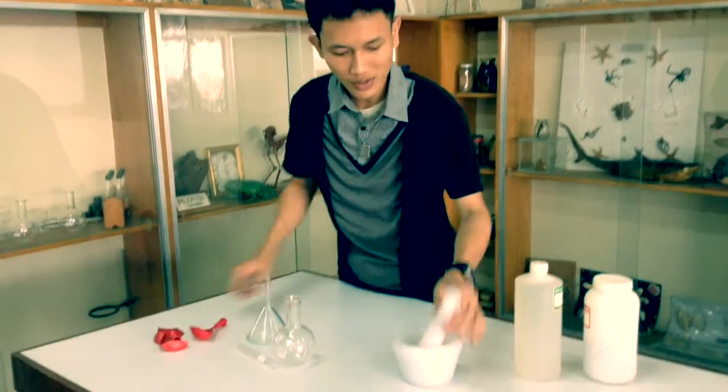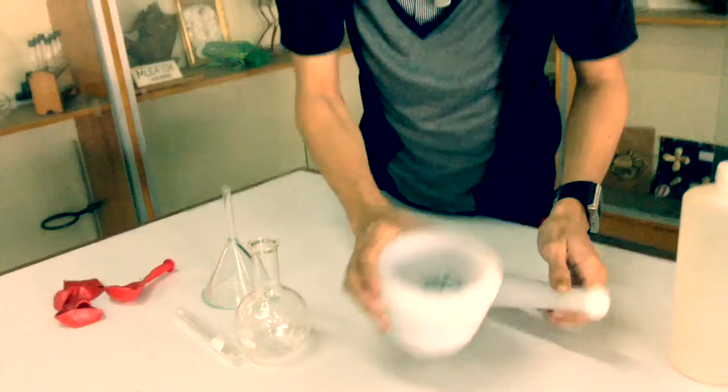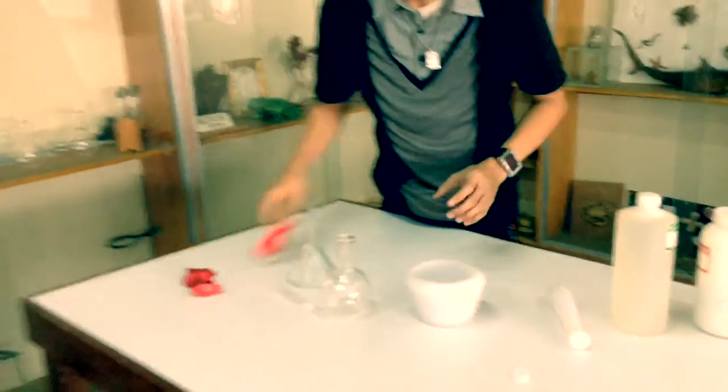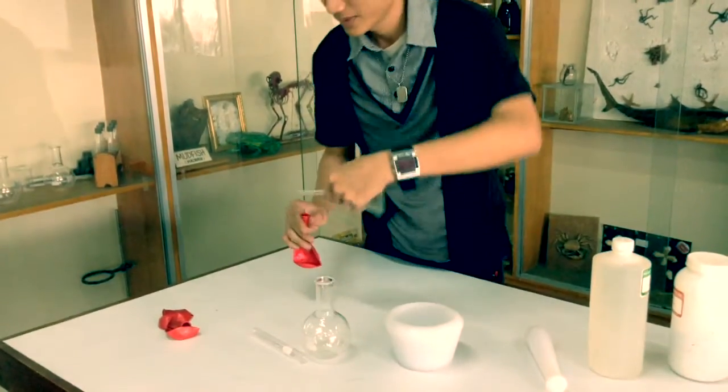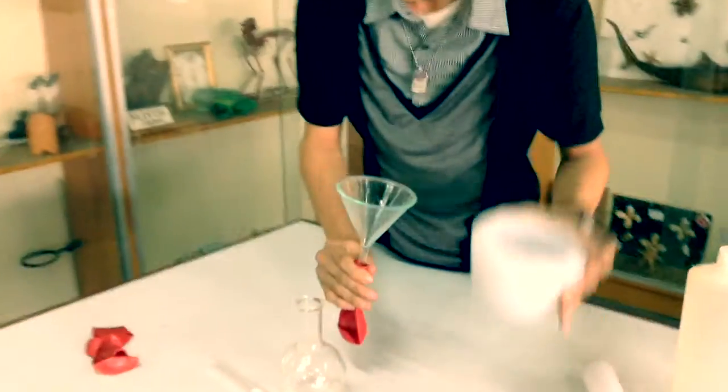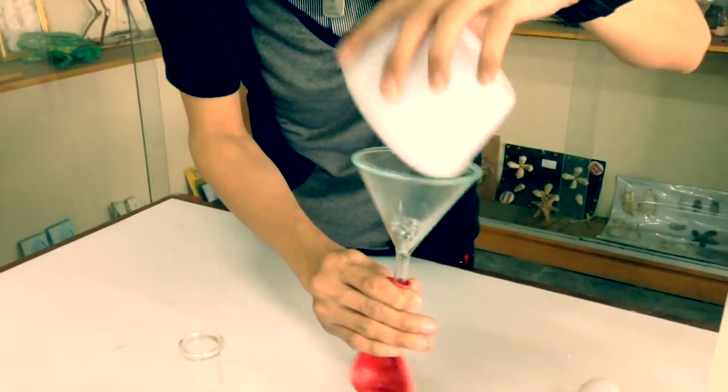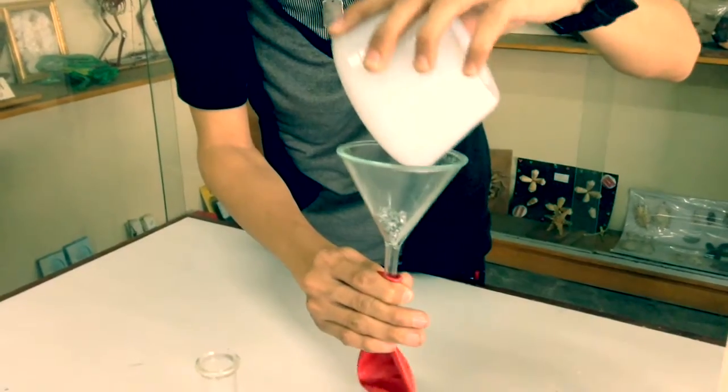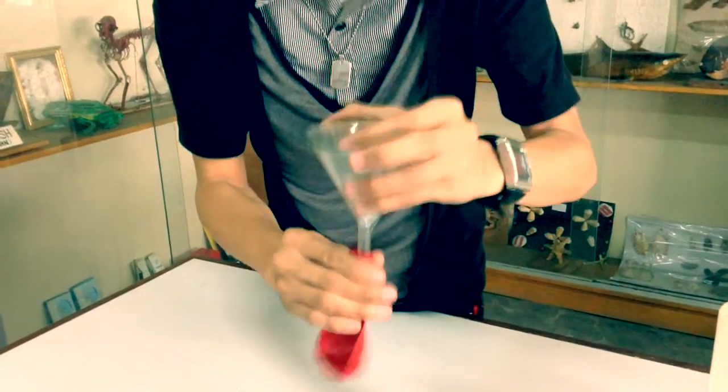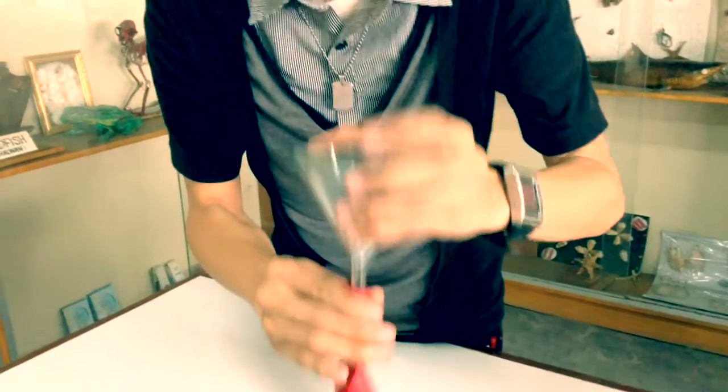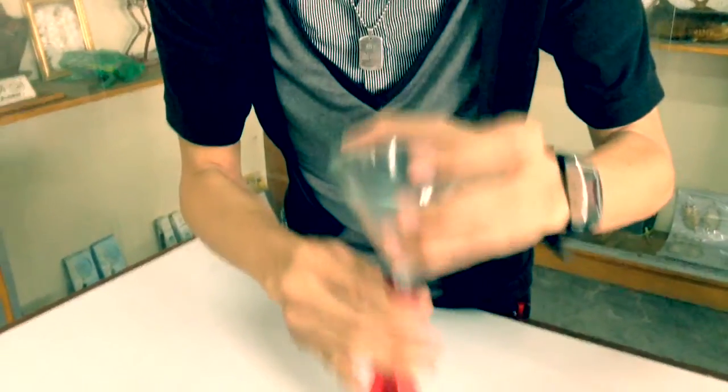First, we will put the prepared zinc moss in it. And we will place it. This is a 19mm funnel. So gradually it enters our balloon.